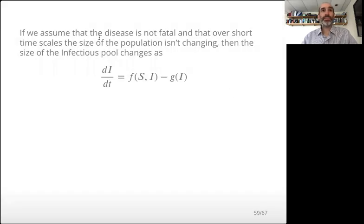So if we assume the disease is not fatal, so there's no other option besides to become recovered, and we assume the population is not changing in size appreciably, then the infectious pool can be inferred just based on what we already talked about. So the infectious pool goes up with the rate of new infections, and it goes down with the rate of recovery.